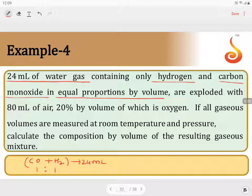So this will also split into 1:1 ratio, 12 mL, 12 mL. Are exploded with 80 mL of air. So the air is taken 80 mL. Of this 80 mL, only 20% is oxygen. 20% is oxygen, which is 20 by 100 into 80, which will be equal to 16 mL. 16 mL is oxygen.